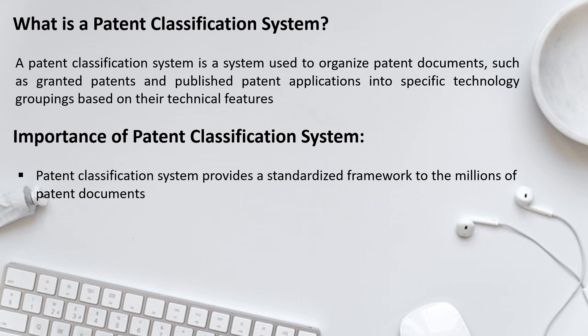Imagine that the books in a library are arranged randomly — how difficult it would be for a person to find a book of their choice. Similarly, since there are millions of patent documents available online, it would become very difficult to find the document you need. Therefore, the patent classification system brings order and a standardized framework to the patent documents that are available.